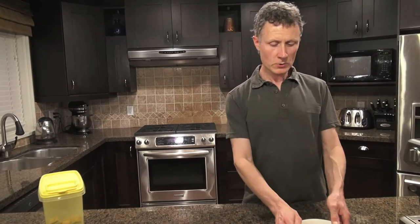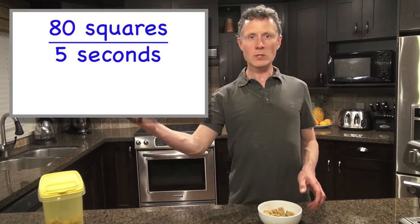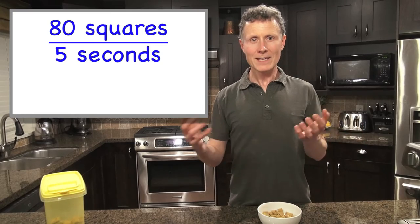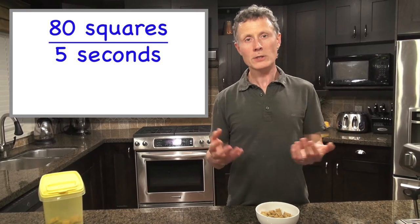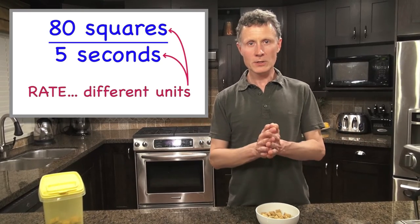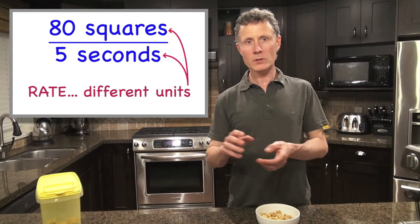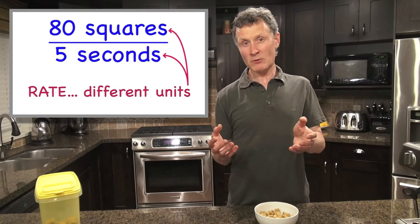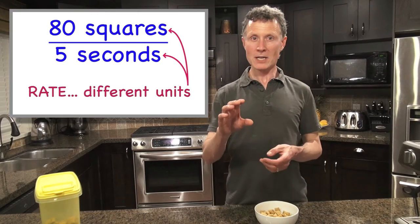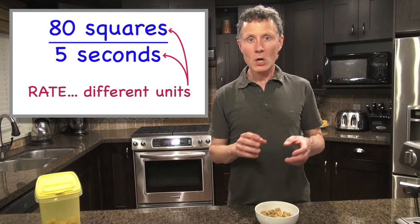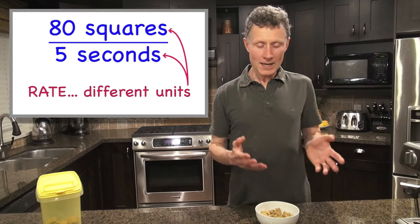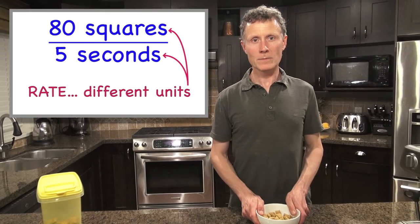If I compare those two quantities — 80 squares to five seconds — that is a rate. You're comparing things that have two different units: squares and seconds. You can write it as a fraction, 80 squares over five seconds, and that shows that comparison.